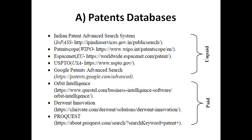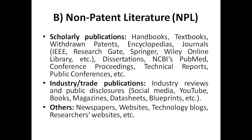You also have to search non-patent literature — not just patent platforms. This includes scholarly publications, handbooks, textbooks, withdrawn patents (those withdrawn by the inventor or rejected), encyclopedias, and journals from different publishers like IEEE. ResearchGate is also a hub for researchers — like Instagram for social life, but for researchers. Other publishers include Elsevier, Wiley Online, and Library Publishers, which have databases like Scopus and ScienceDirect.